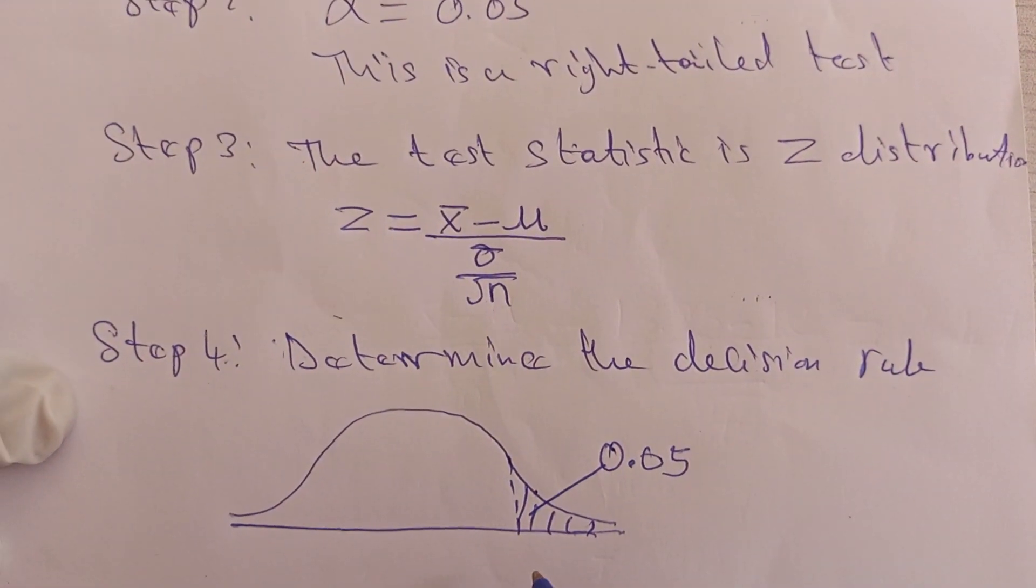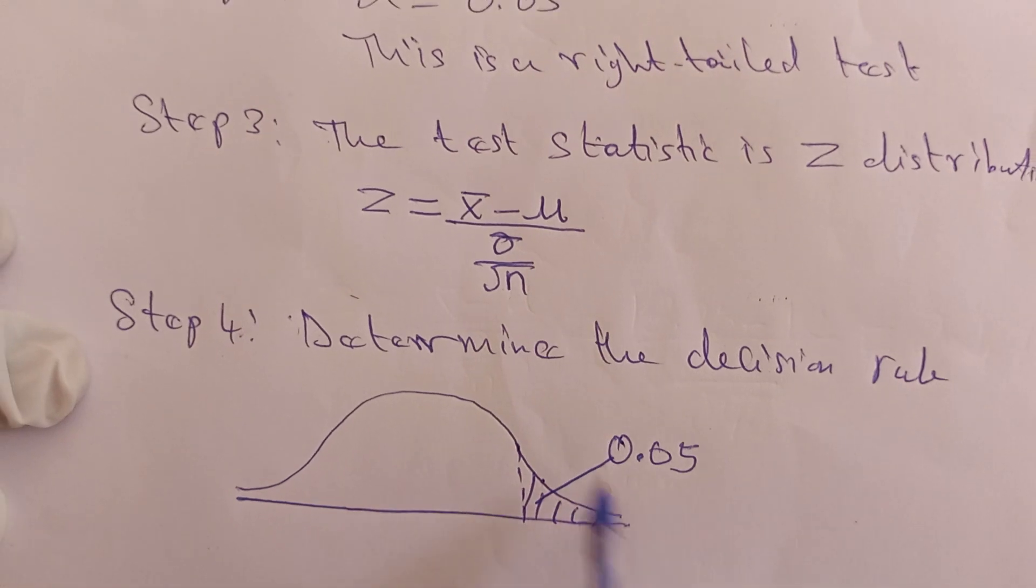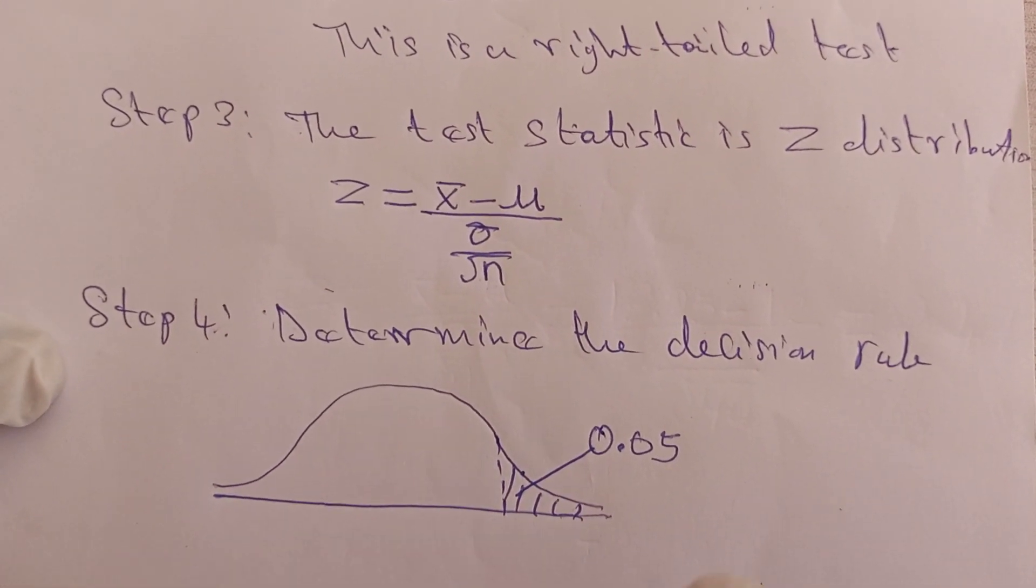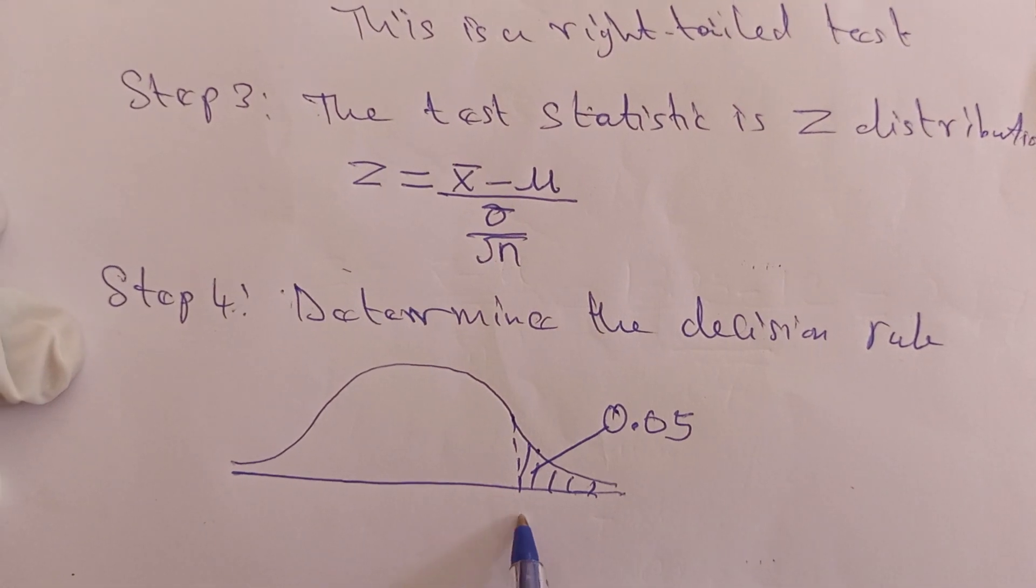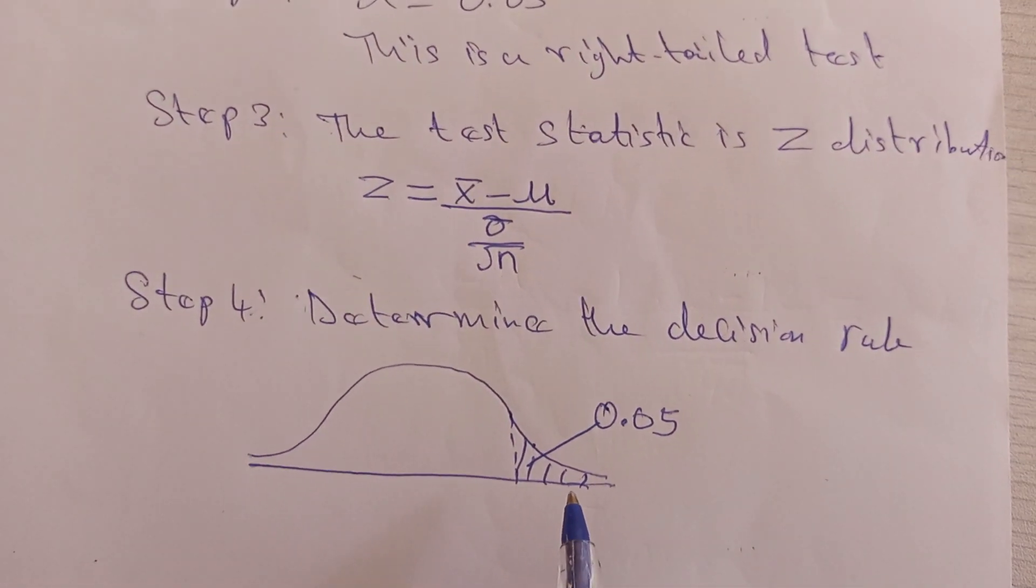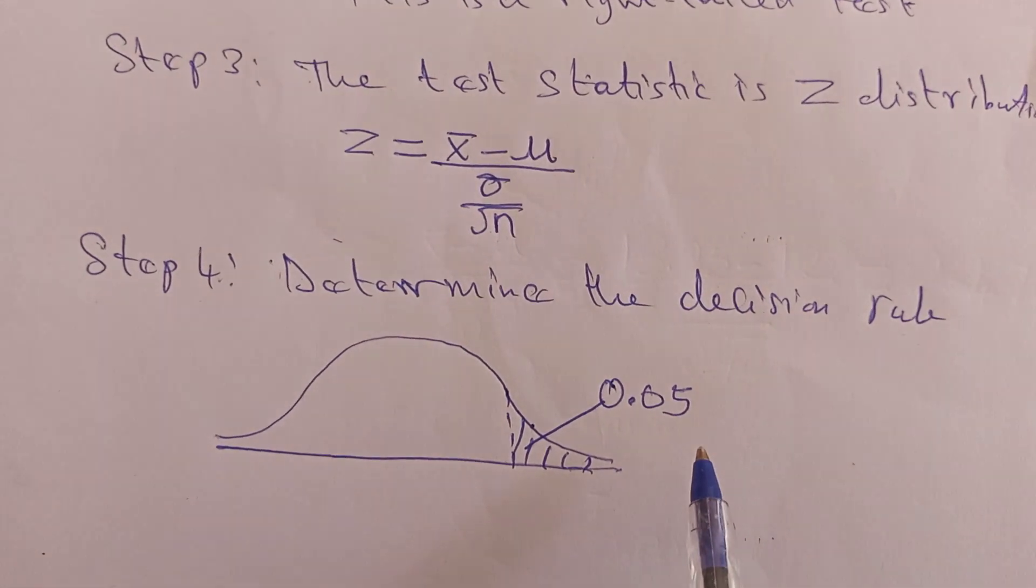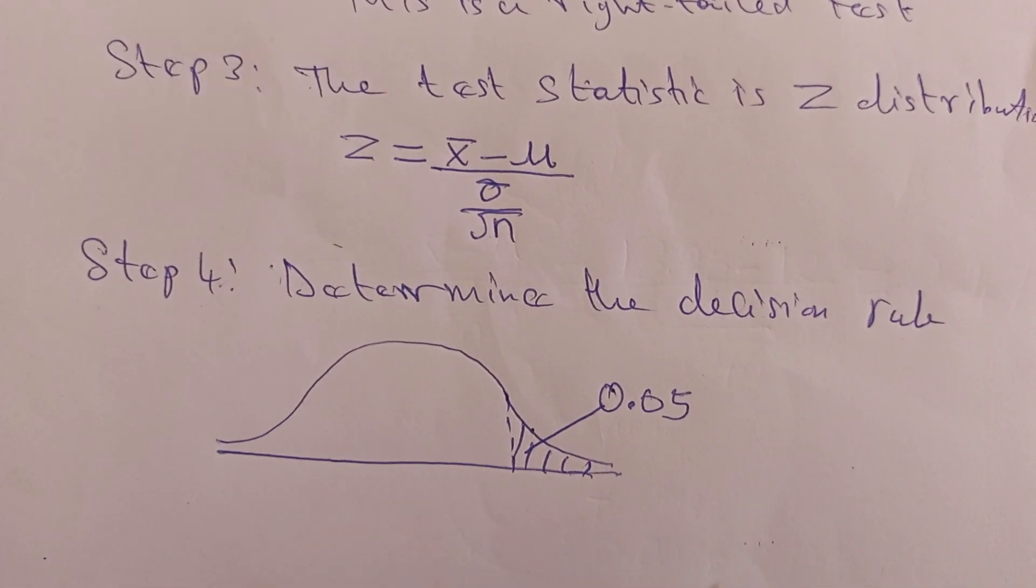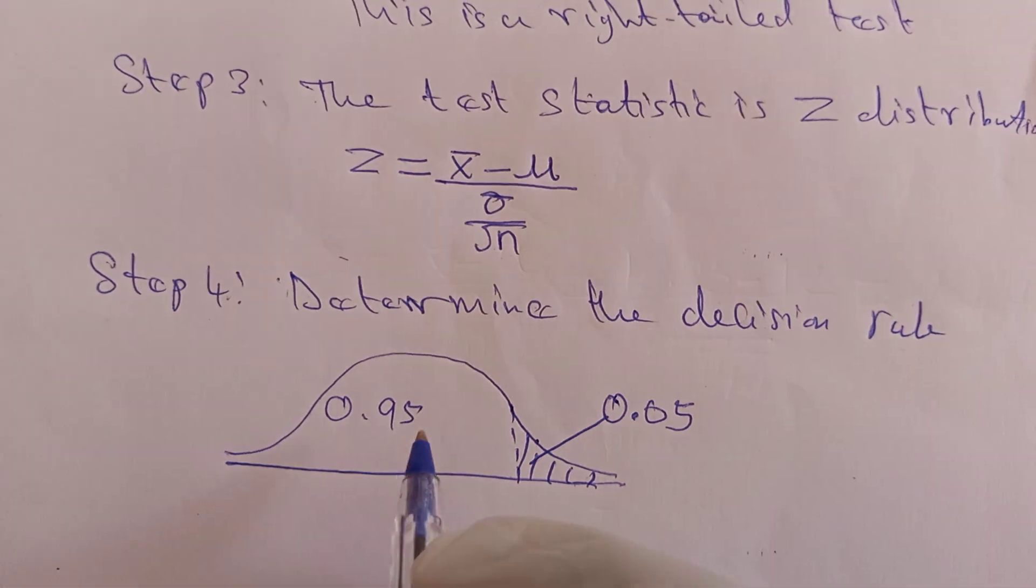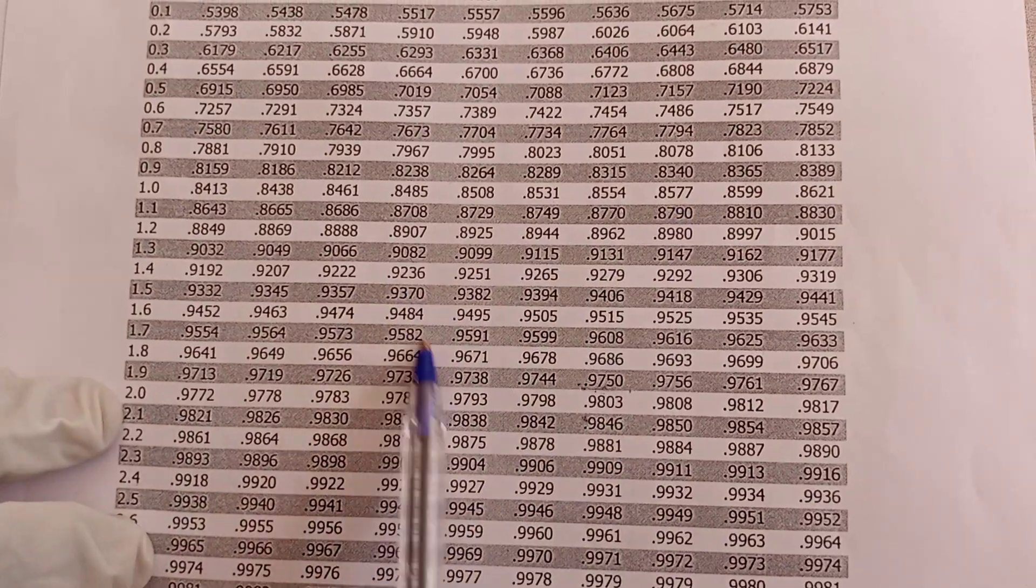If it was a two-tail test, you would have created another tail over here and divided 0.05 by 2. But because this is a one-tail test, you give the whole 0.05 to the right tail and use it to find the critical value of Z. To find the critical value, you subtract 0.05 from 1. When you take 1 minus 0.05, you get 0.9500, which means the left side area. When you take your Z table, you should look for 0.9500.